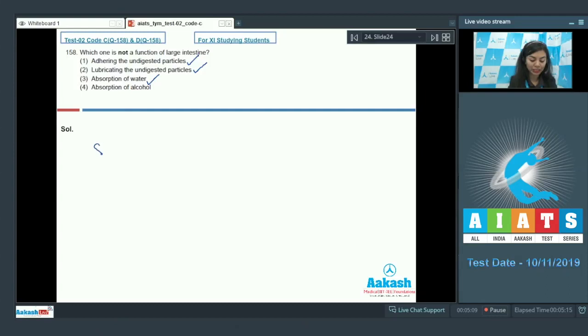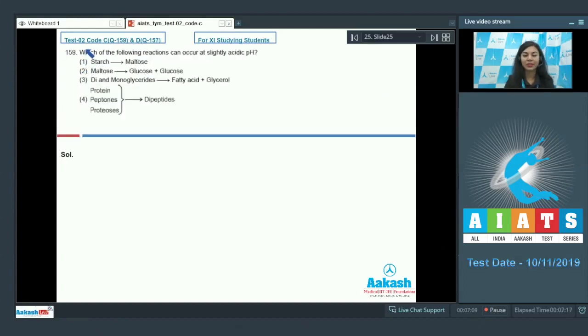Absorption of alcohol mainly takes place in stomach, which is also responsible for absorption of water and simple sugars. No significant absorptive activity takes place in large intestine. The odd man out is absorption of alcohol, and the right answer is option number 4.